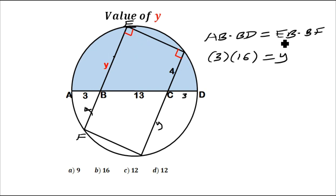BF is 4, which was similar to that other segment. So we have y times 4.